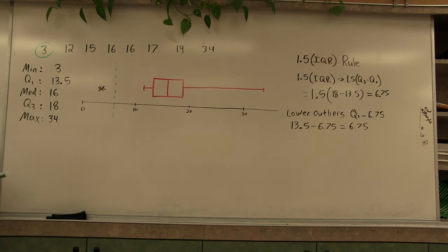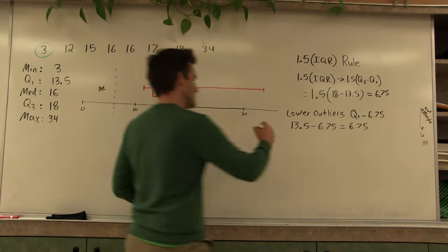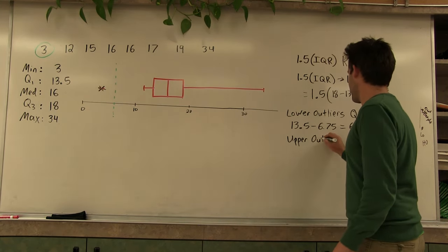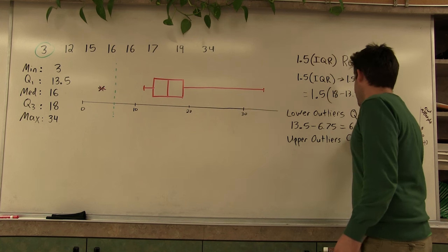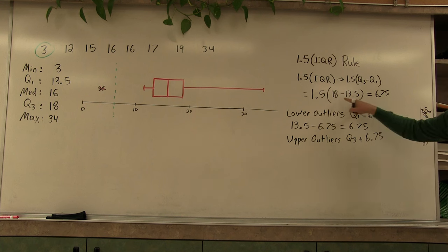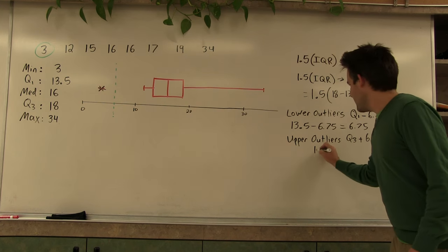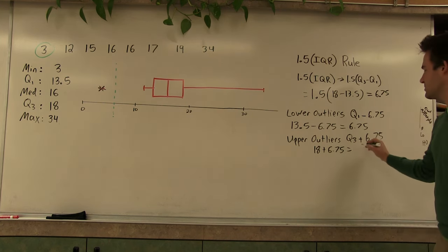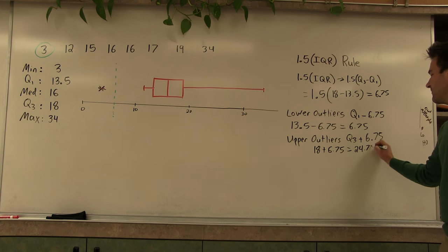But we have to do the same thing for upper outliers. To determine if there's any upper outliers, we take quartile 3 and add 1.5 times the interquartile range to it. So since quartile 3 is 18, 18 plus 6.75 is 24.75, which is right here.